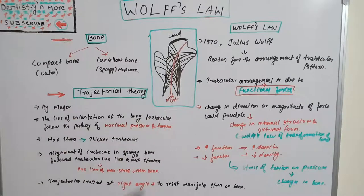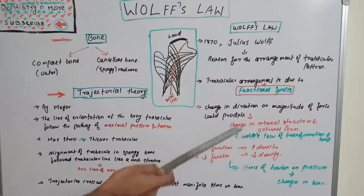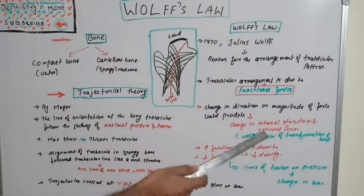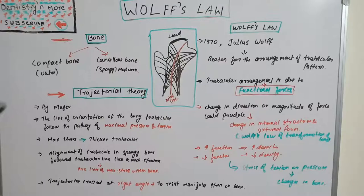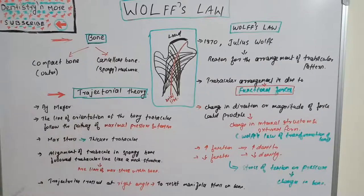Wolff's Law of transformation of bone states that a change in direction or magnitude of force could produce a change in the internal structure and external form of that particular bone. The functional forces happening in the body — if we change that functional force in direction or magnitude — can result in a change in the internal structure and external form of that particular bone.